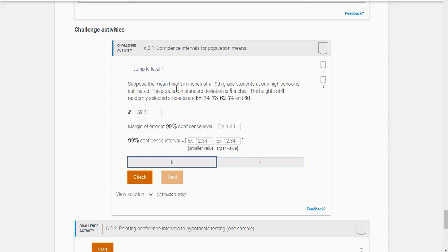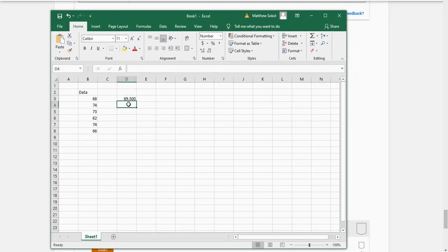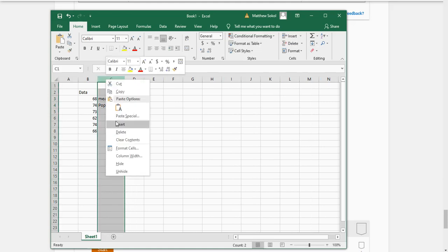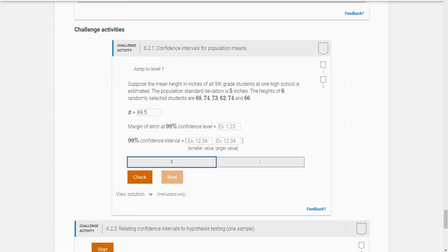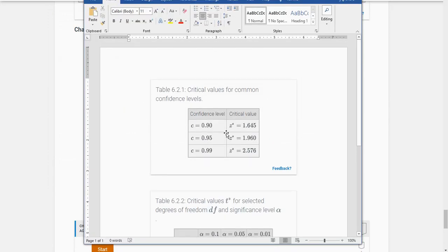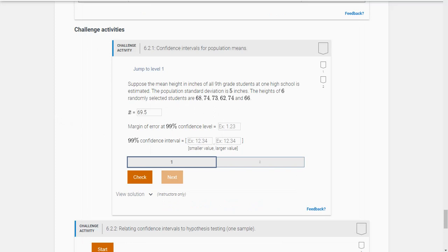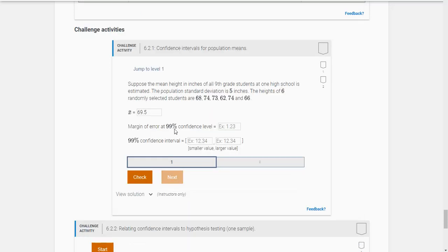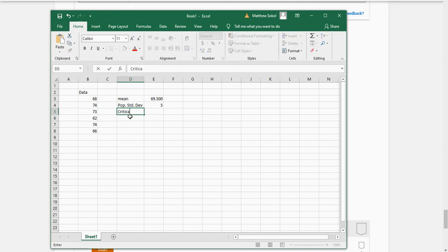It says the margin of error at 99% confidence. Notice it said the population standard deviation of five is given. So the population standard deviation was five. You're going to need to find the margin of error for 99% confidence interval. When you're given the population standard deviation, you're going to use these first critical values. So at a 99% confidence level, your z critical value is 2.576.